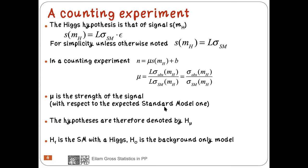I use the Higgs as an example — it's the only particle we found so far, so that's the only example I can give. The signal is luminosity times the cross section of the standard model Higgs times the efficiency. For simplicity, I will assume an efficiency of 100%. In a counting experiment, the number of observed events is S plus B, times the luminosity.